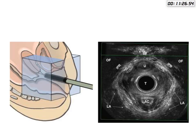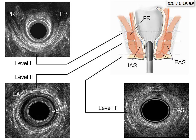The probe has a crystal rotating 360 degrees over the 6-centimeter length of the cap. It scans from the anal verge to the tip of the 6 centimeters and produces a cube-shaped image. The endo-anal ultrasound represents the level of the lower anal canal — the level of the external anal sphincter — the mid anal canal, showing the external anal sphincter in white, the internal anal sphincter in gray, and the puborectalis sling at the upper part of the mid anal canal.